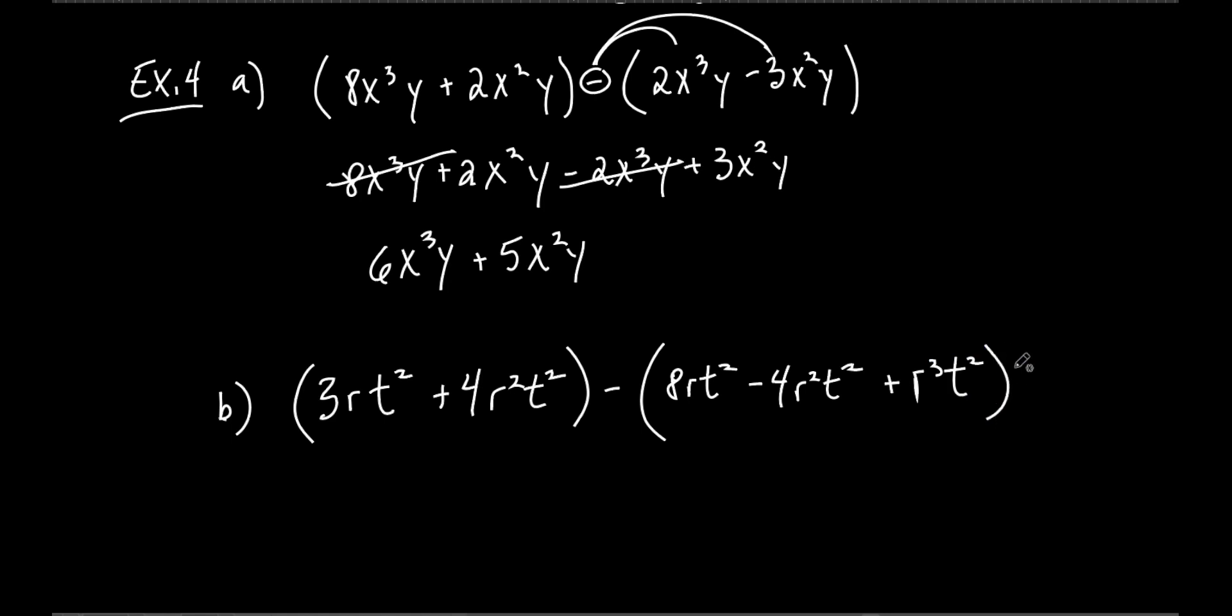This is 3rt squared plus 4r squared t squared minus 8rt squared minus 4r squared t squared plus r cubed t squared. Just so I don't have to rewrite everything over again, I'm going to do something kind of a little tricky. I'm distributing the negative through there. So that makes this negative 8rt squared. What does it make this one? Makes it positive. And what does it make this one? That makes that negative.